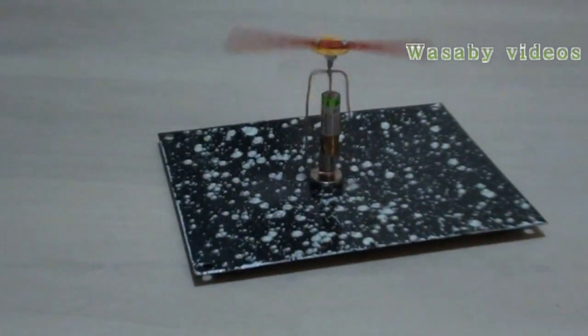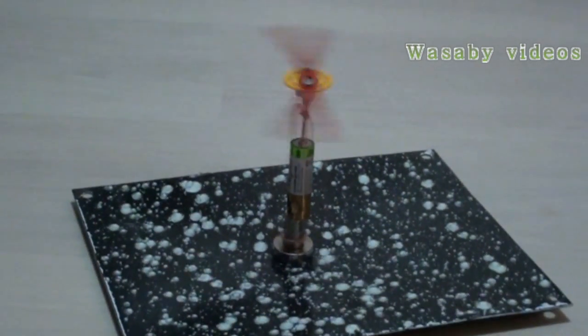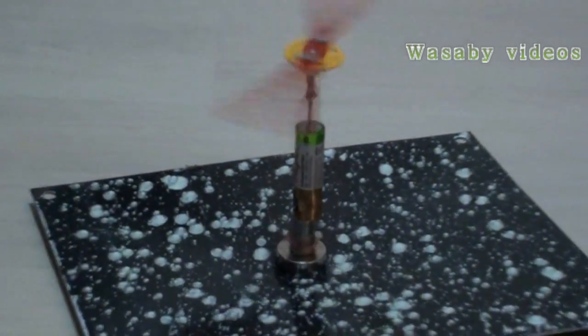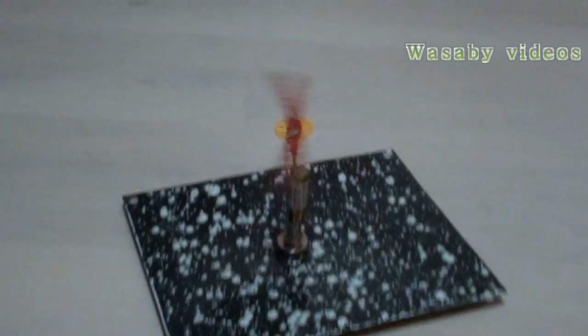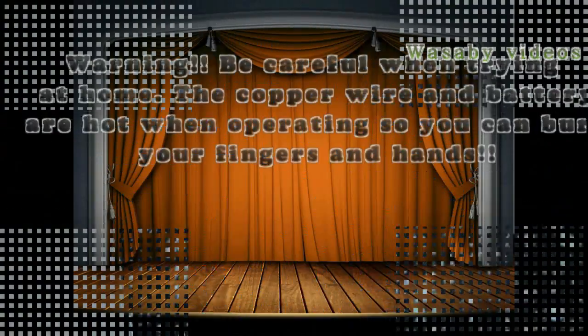So this is how it operates, how it works. You can see the rotation is quite fast. There is just neodymium magnets, battery, copper wire and a screw. That's all for today.